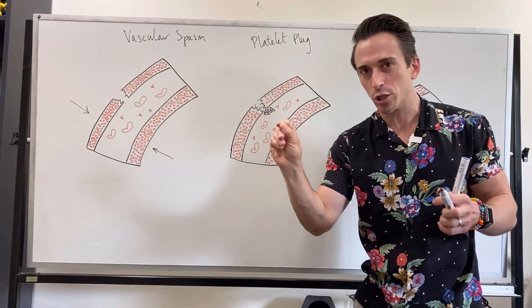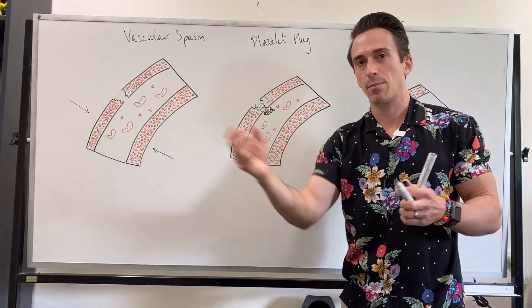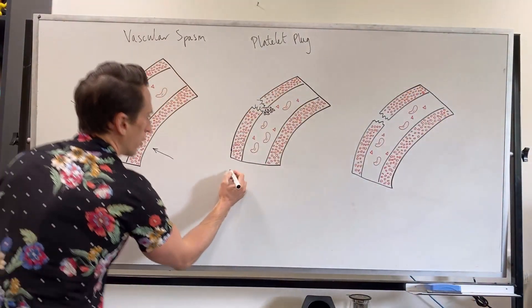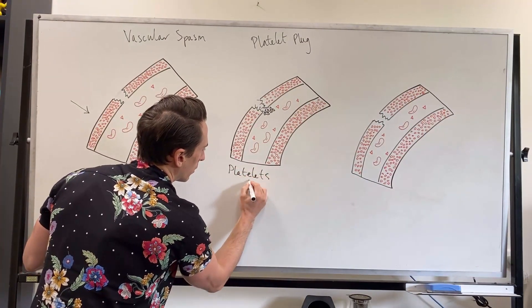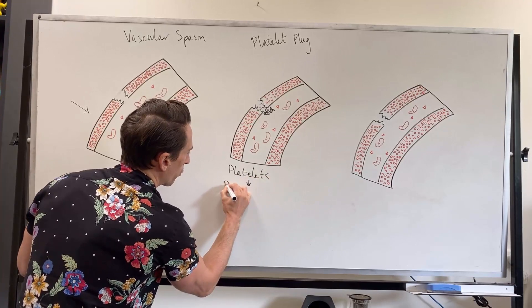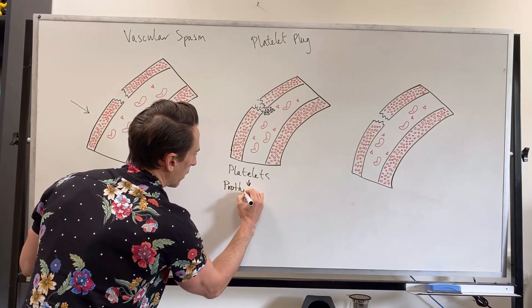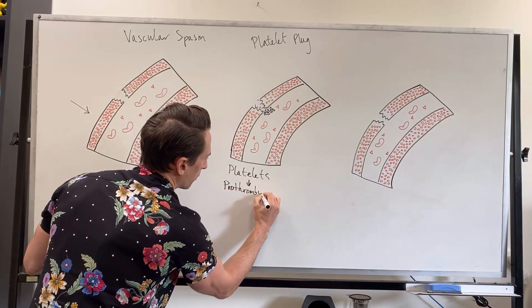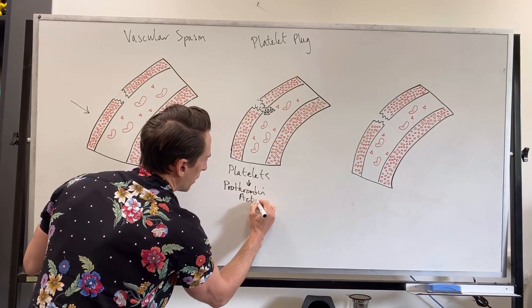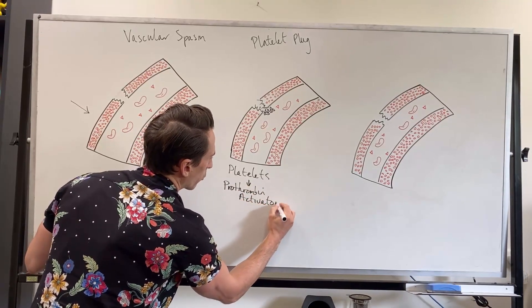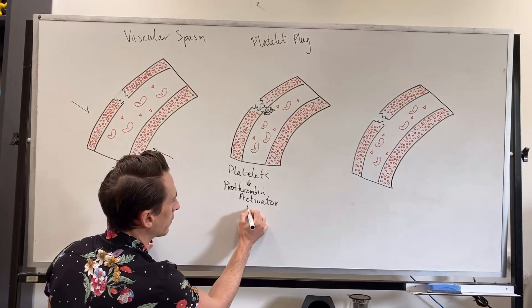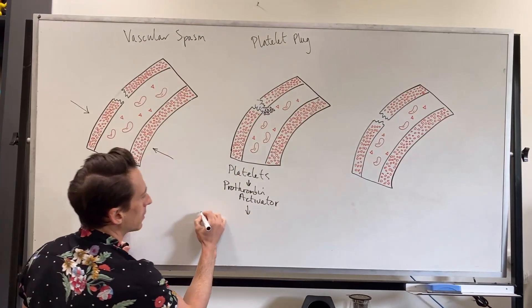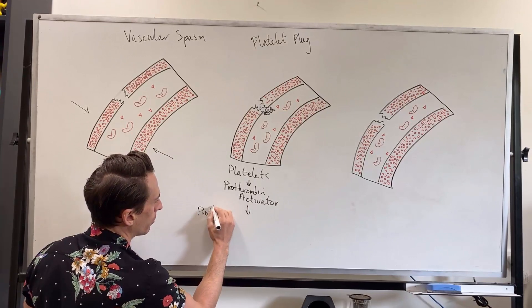When the platelets stick to the collagen, the platelets release something. So what do the platelets release? The platelets release something called prothrombin activator. Now prothrombin activator released from the platelets when they bind to this collagen, prothrombin activator activates prothrombin.